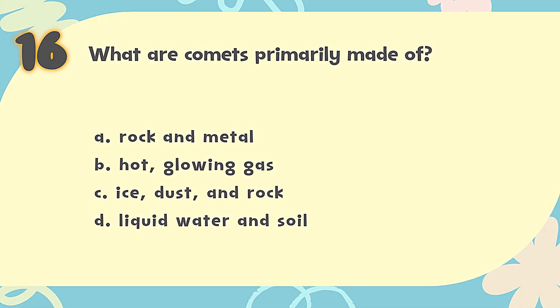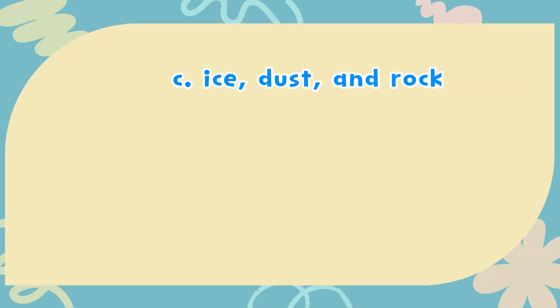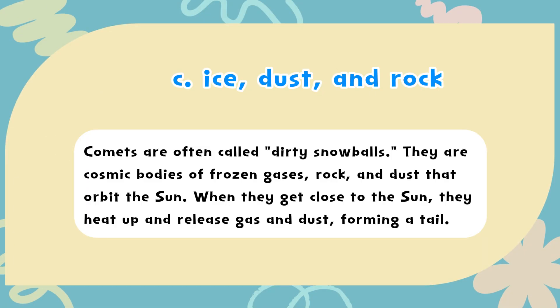The correct answer is C: Ice, dust, and rock. Comets are often called dirty snowballs. They are cosmic bodies of frozen gases, rock, and dust that orbit the sun. When they get close to the sun, they heat up and release gas and dust, forming a tail.